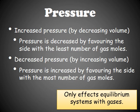The final thing to look at is pressure, and this only affects systems in equilibrium when they are all gases. If you increase the pressure by decreasing the volume of the reaction vessel, the system will favor the side with the least number of gas moles. If you decrease the pressure by increasing the volume, the equilibrium will increase the pressure by favoring the side with the most gas moles.